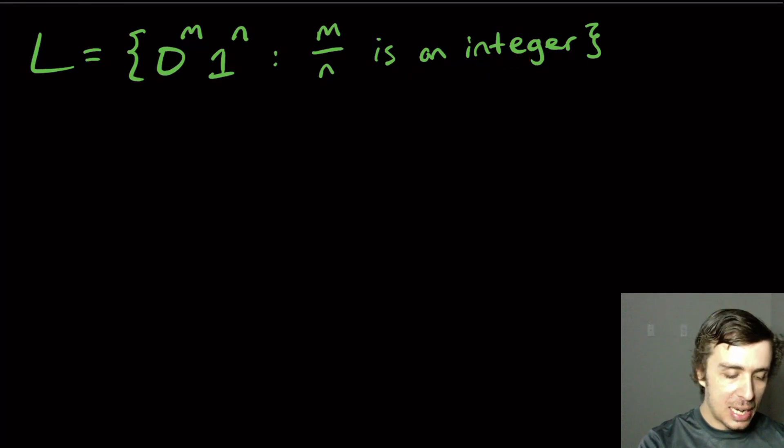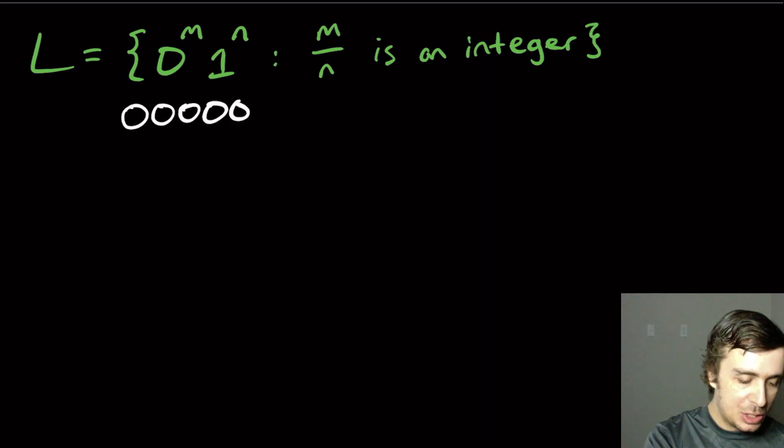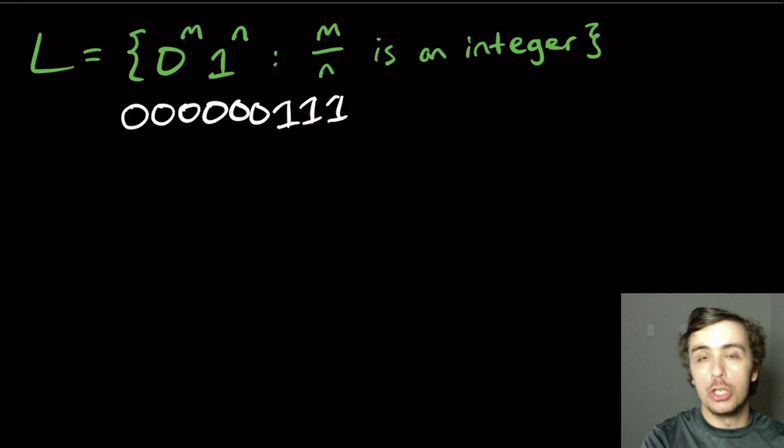So here this is just saying that the number of zeros is a multiple of the number of ones. So as an example, if we have, let's say, six zeros, then I can have three ones because six over three is two, so that's an integer. But if I struck one of those zeros out, then that string would not be in L because five over three is not an integer.